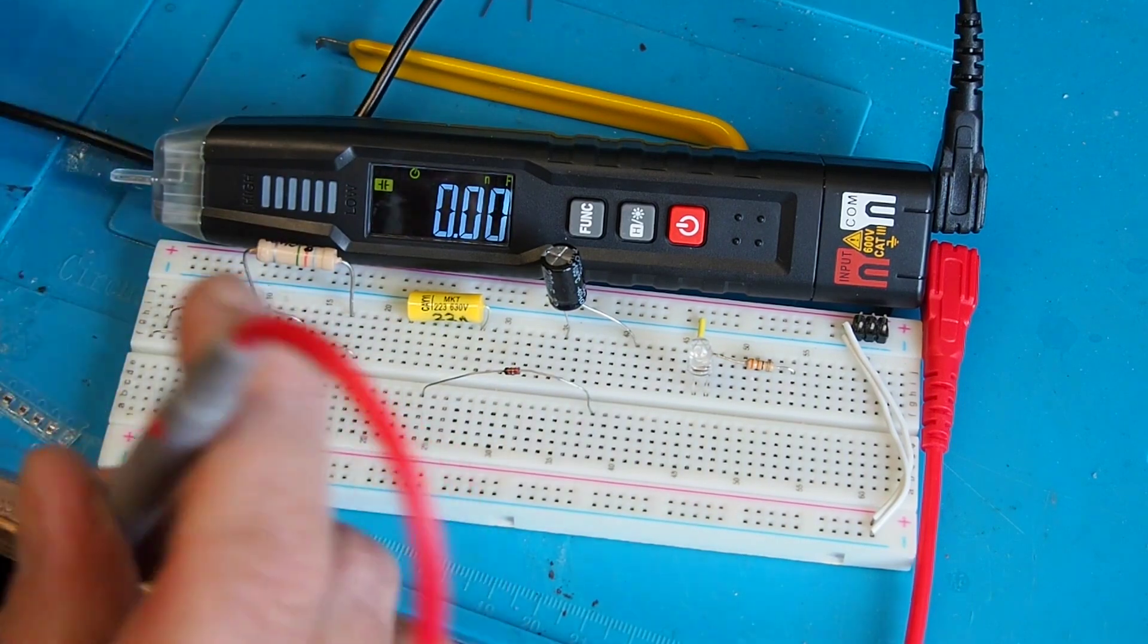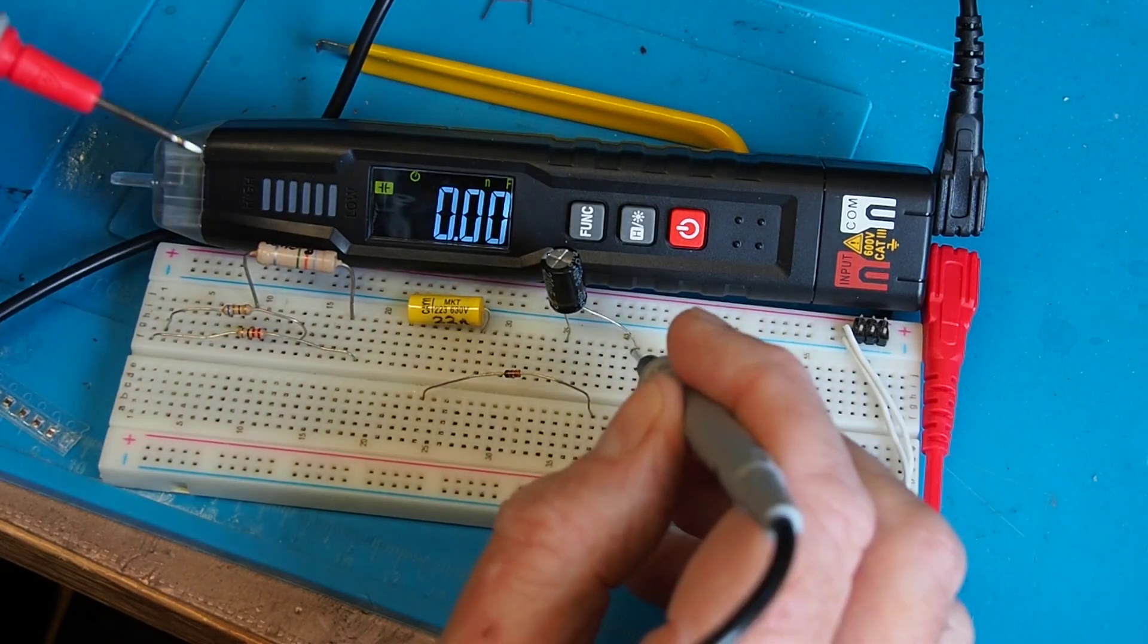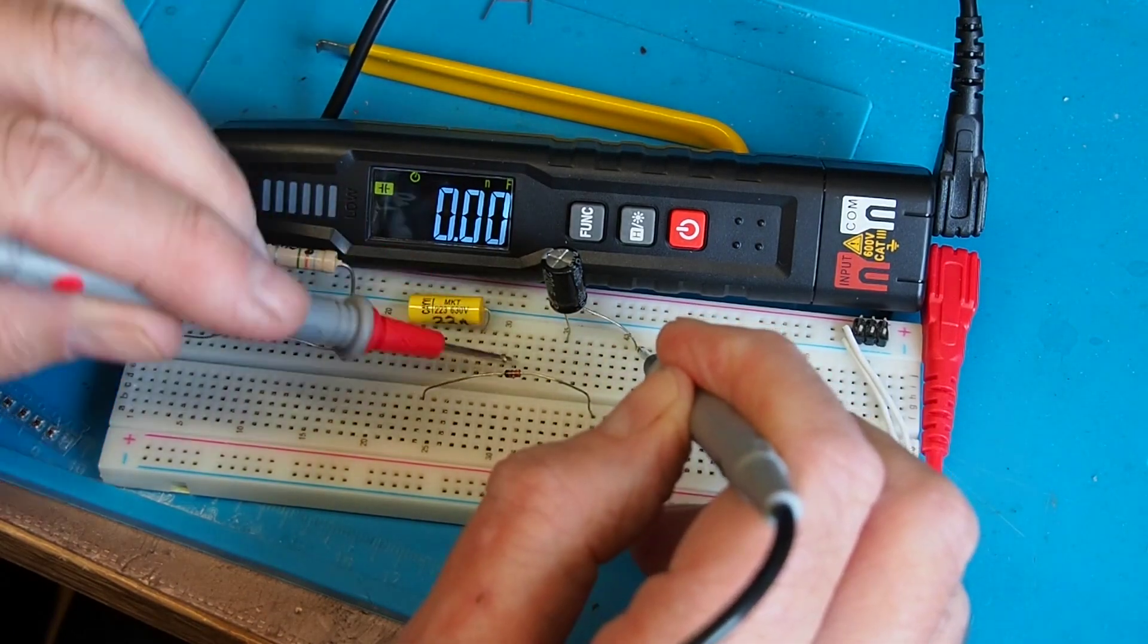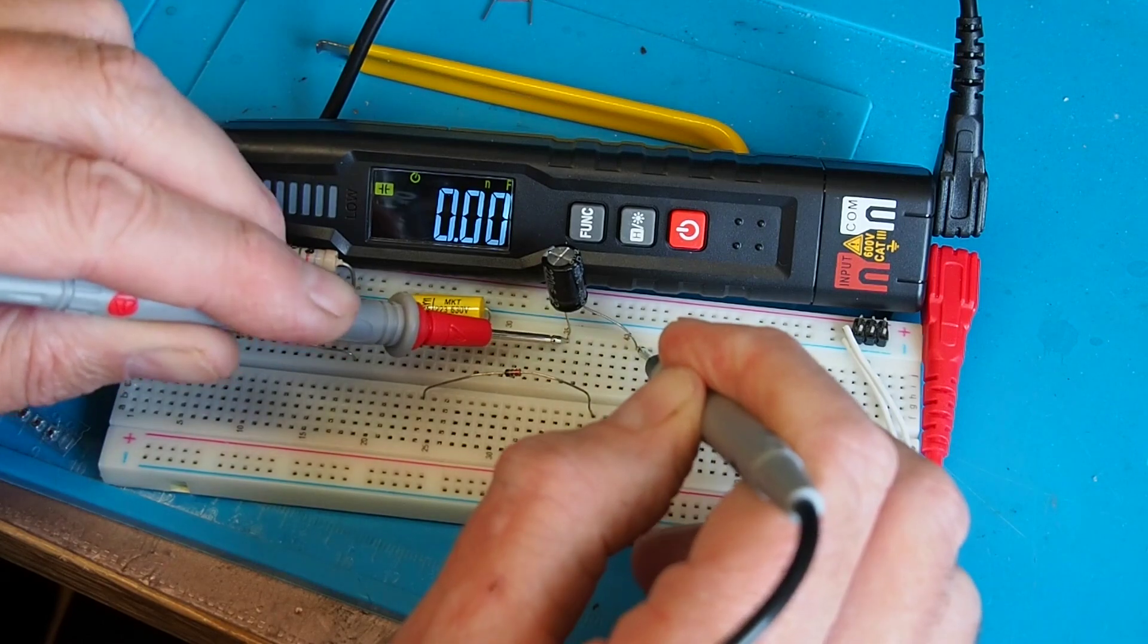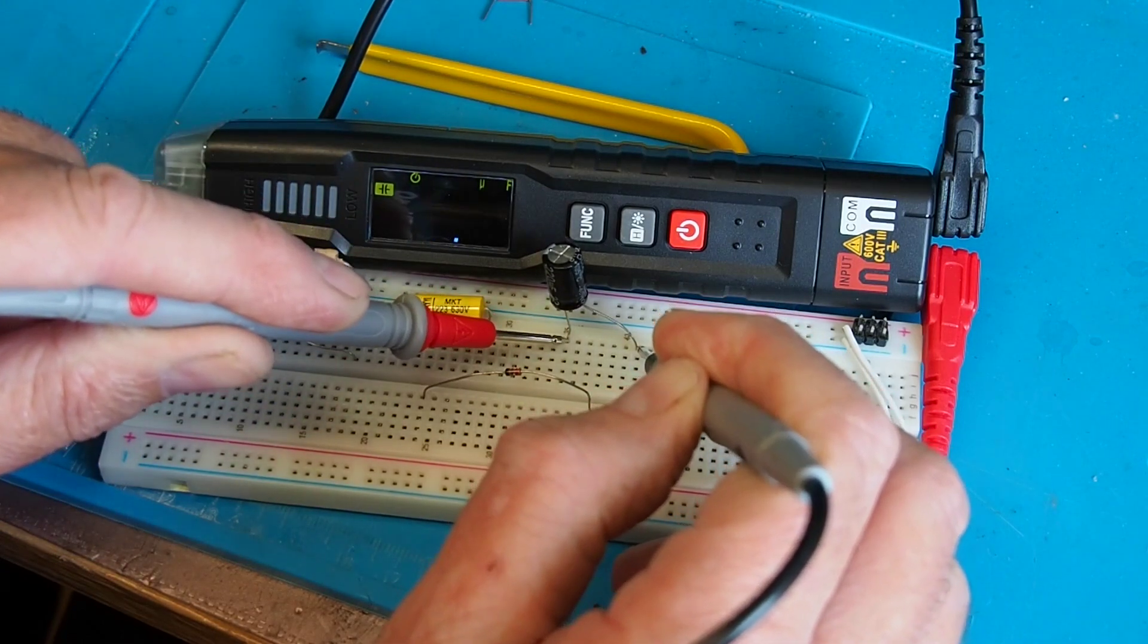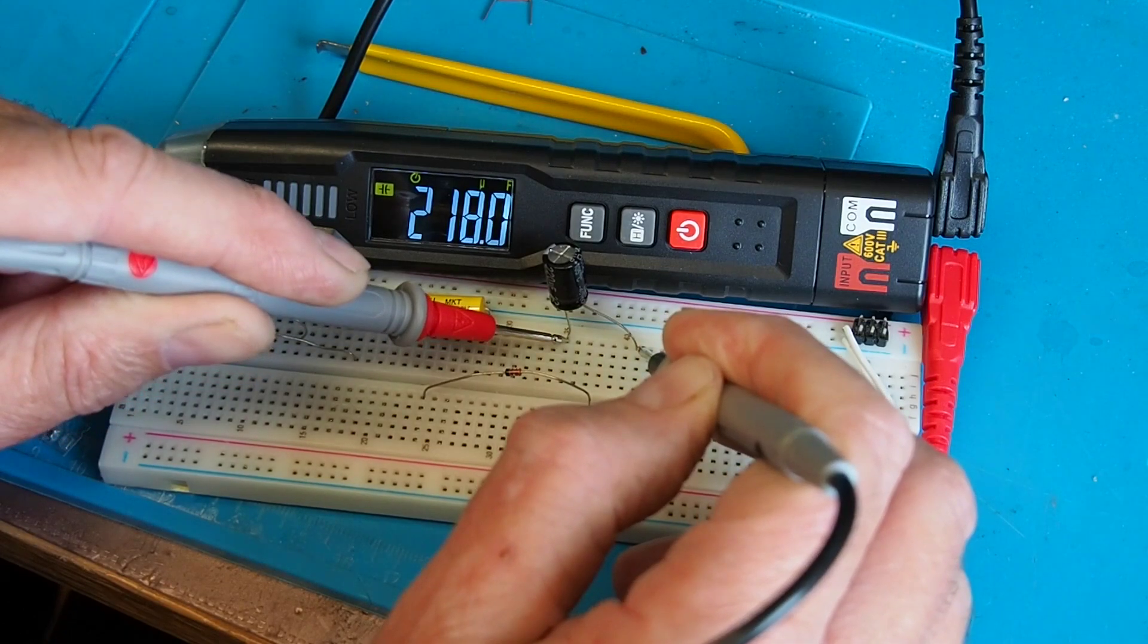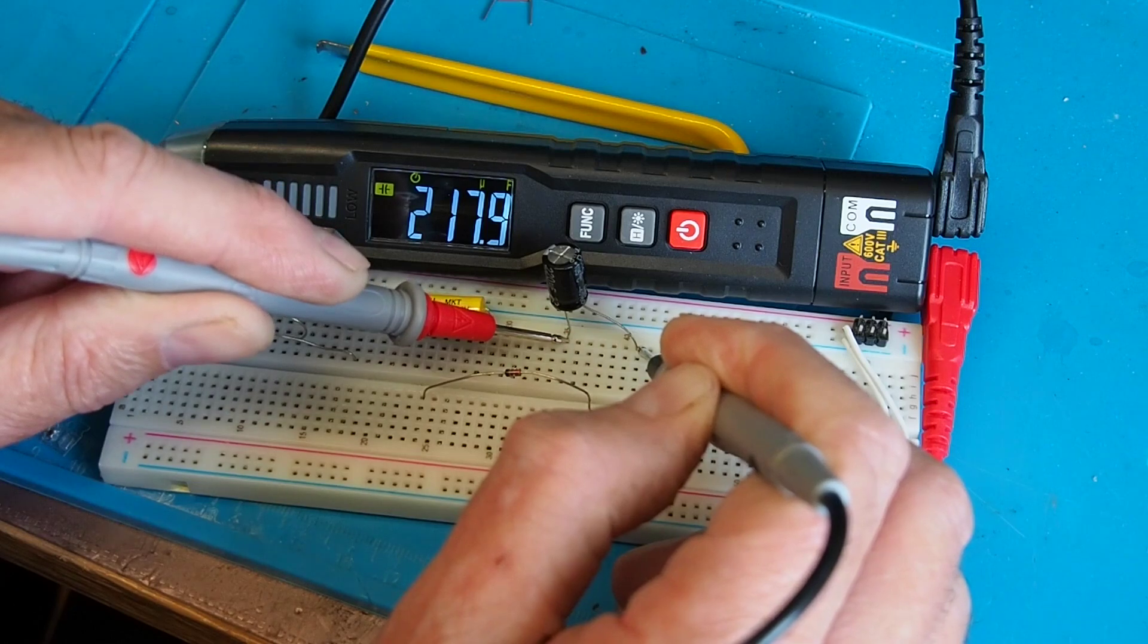400 microfarads is the top limit for measurement. I've got a 220 microfarad electrolytic here. Just get the polarity right and when we do eventually make a connection, 218 microfarads. That's pretty reasonable. So that's resistance and capacitance.